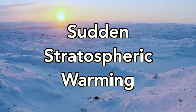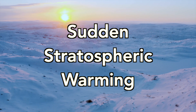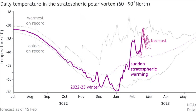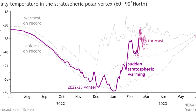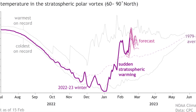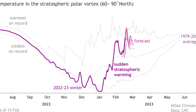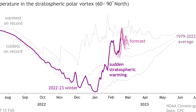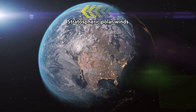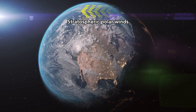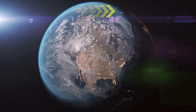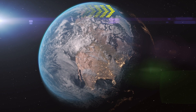It sounds worse than it is. These events are actually a fairly common atmospheric phenomenon — a process where the stratosphere warms suddenly, causing the stratospheric polar vortex to weaken. When this happens, the westerly winds that blow around the poles in the stratosphere weaken and can even reverse direction in the strongest events.